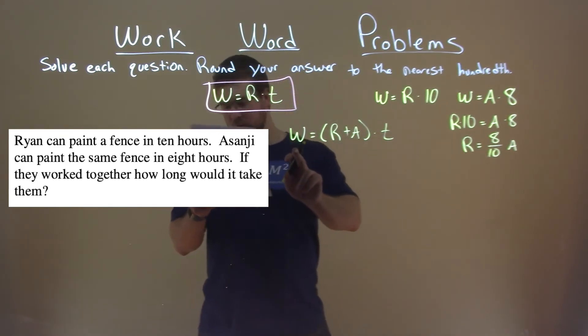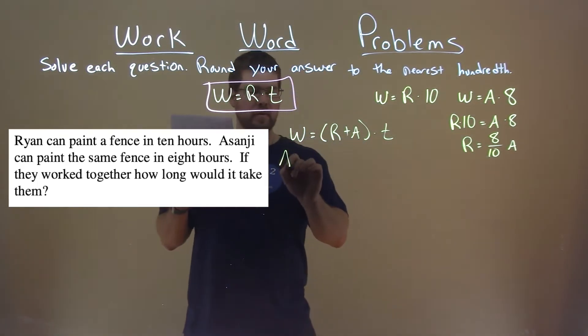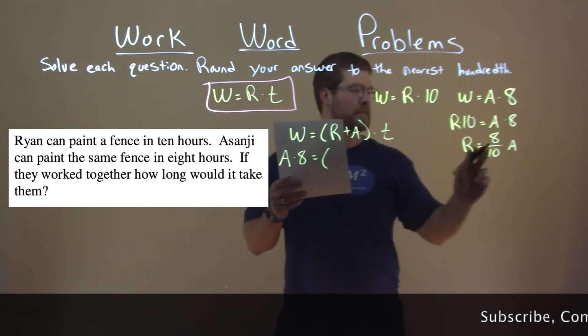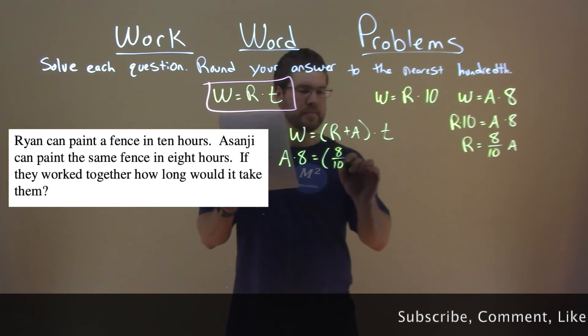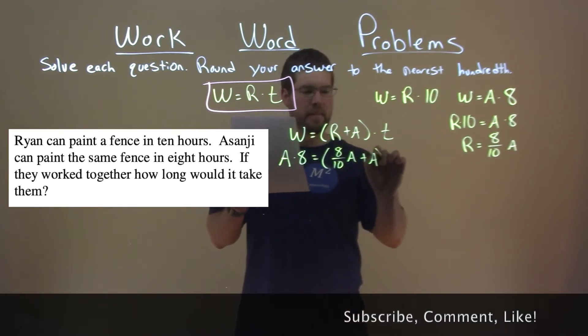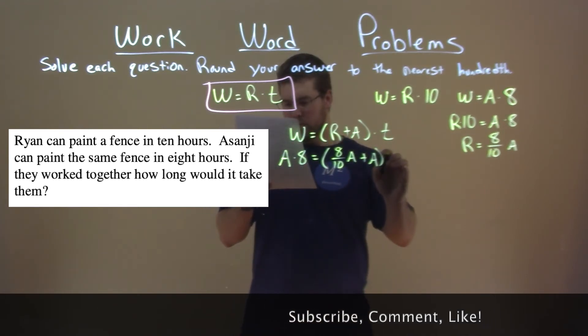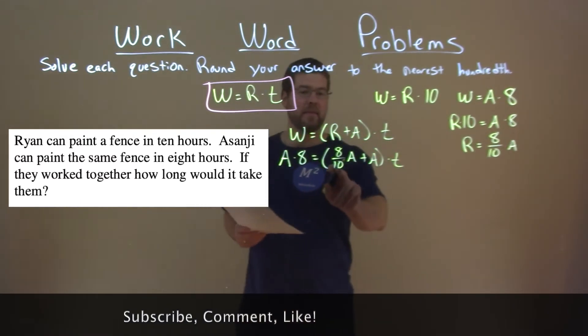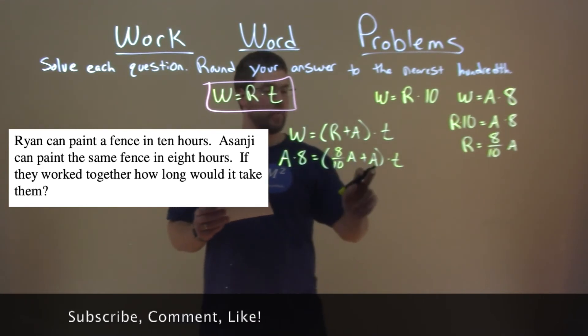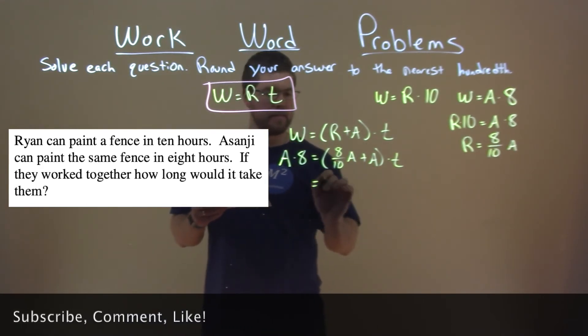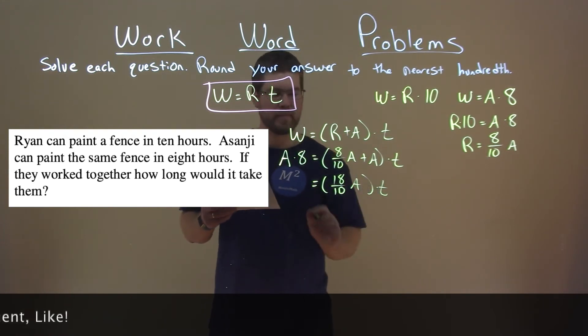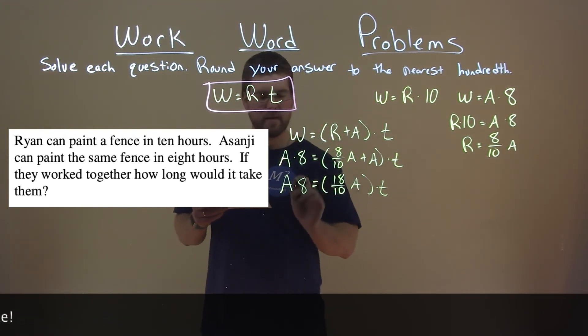Well, we know W is equal to A times 8, so we have A times 8 here. And Ryan's work rate is equal to 8 tenths of Asanji's, okay, plus A times T. Well, we can add them together. 8 tenths of A plus 1 A is 18 over 10 A times T. And we have 8 A here.